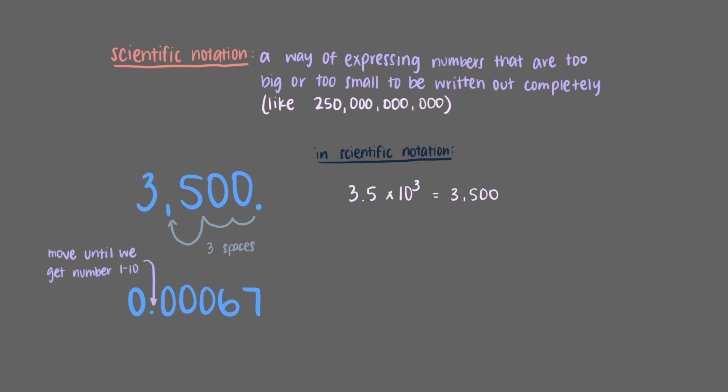But in this case we have to move the decimal point to the right. We'll move the decimal point 4 places to get 6.7, which means we multiply 6.7 by 10 to the minus fourth power.